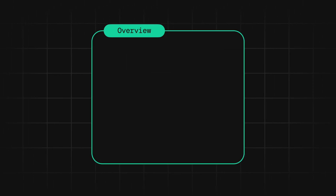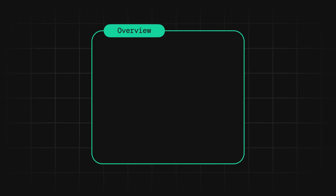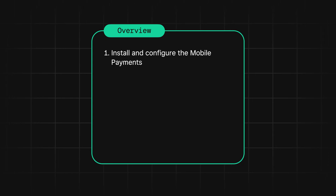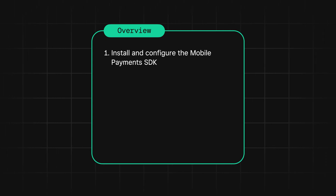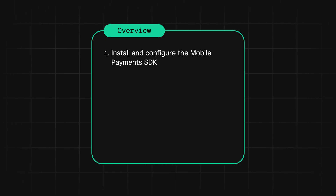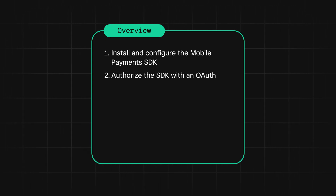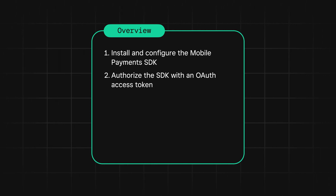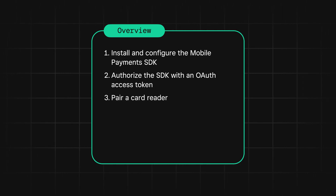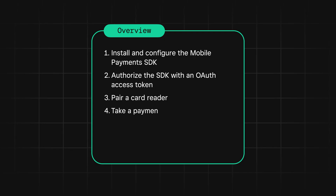To get started with the Mobile Payments SDK, there are just a few steps you'll need to follow. First, you'll have to install and configure the SDK in your app. Next, you'll have to authorize the SDK with an OAuth access token. After that, you can pair your card reader, and once that's complete, you can start taking payments.